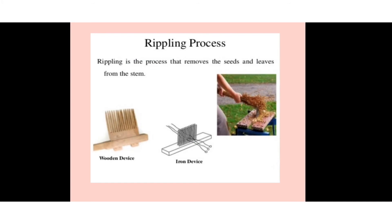The rippling process involves the removal of seeds and leaves from the stem. Both wooden and iron devices are used for this purpose, after which only the clean stem remains.